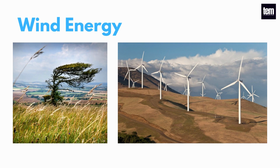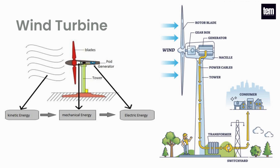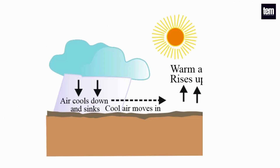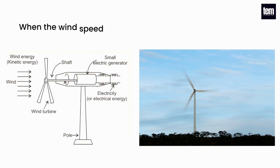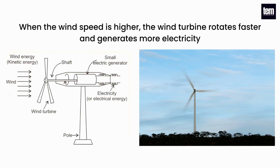Wind is essentially air in motion, which carries with it kinetic energy. The amount of energy contained in the wind at any given instant is proportional to the wind speed at that instant. Wind energy is generated by capturing the movement of atmospheric air using wind turbines and converting it into electricity. The wind flow is driven by differences in temperatures of the Earth's surface when heated by sunlight, combining with the rotation of the Earth. When the wind speed is higher, the wind turbine rotates faster and generates more electricity.